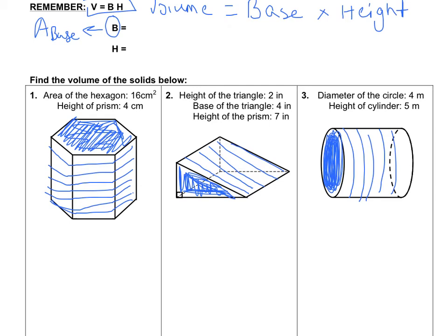For number 1, to solve this problem, we're going to use our formula: volume equals the area of the base times height. For number 1, this would be 16 times 4, 4 being this side right here. The result is 64, and our units are centimeters cubed.